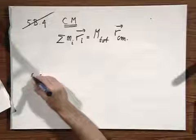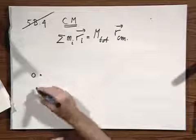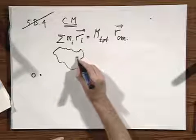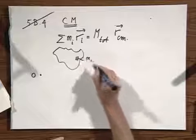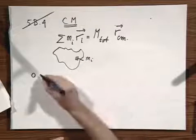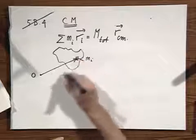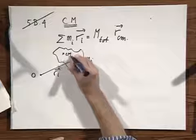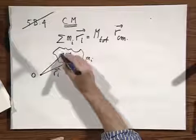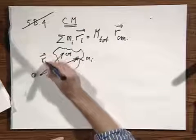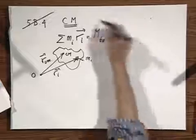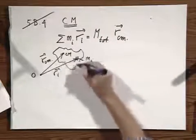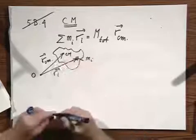What do I mean by this? Let O be the origin — this is my laboratory frame. Here I have some object. I carve out a little volume element which has mass Mi. Here is the position vector Ri. Let this be the center of mass, with position vector R center of mass. That is the meaning of this equation. And M total is the sum of the mass of all these little elements — the total mass of the object.